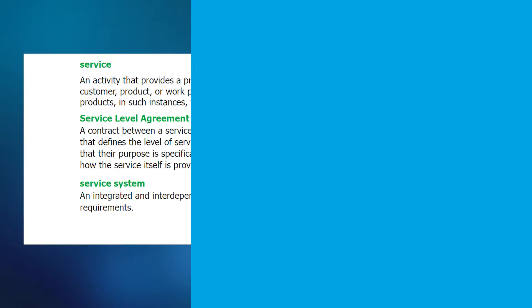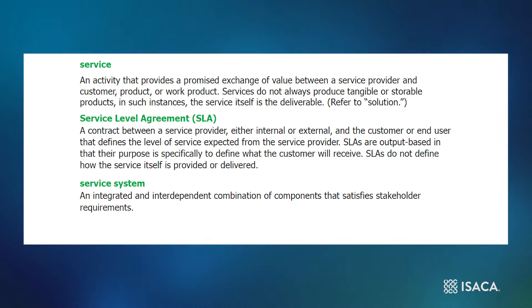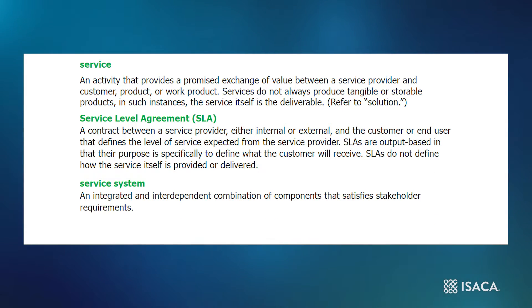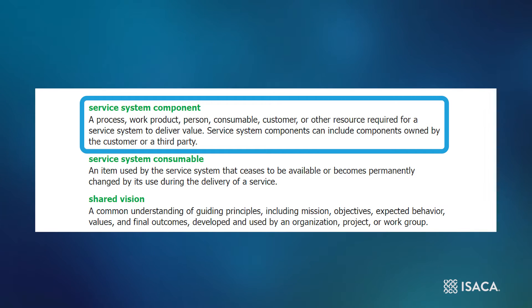It is worth pausing here to consider what a service system means. According to the CMMI glossary, a service system is an integrated and interdependent combination of components that satisfies stakeholder requirements. A service system component is a process, work product, person, consumable, customer, or other resource required for a service system to deliver value.